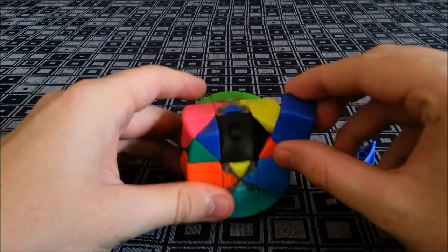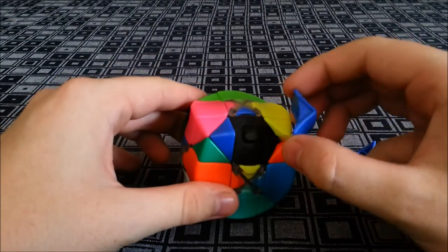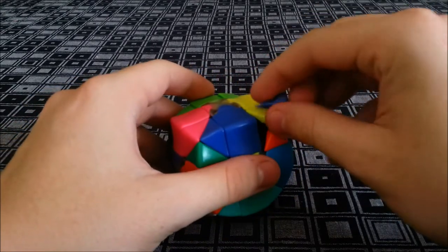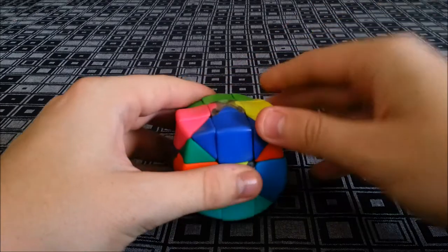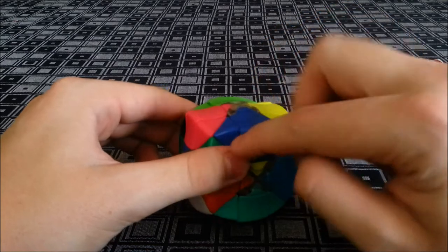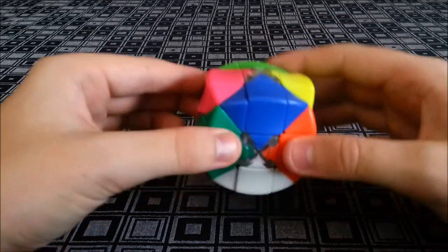They're kind of like removable stickers and they don't peel, which is good, and it's easy to reset the cube. For someone who knows how to do a Rubik's Cube and they mess this up, they can just pull these off and put them back where they need to go.